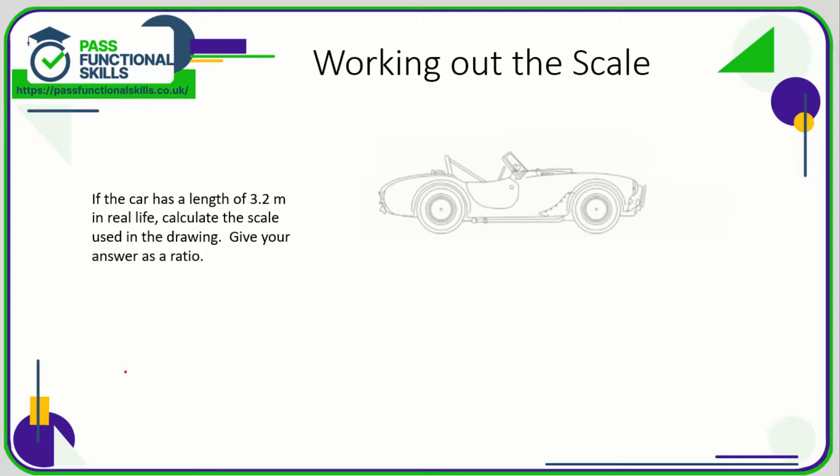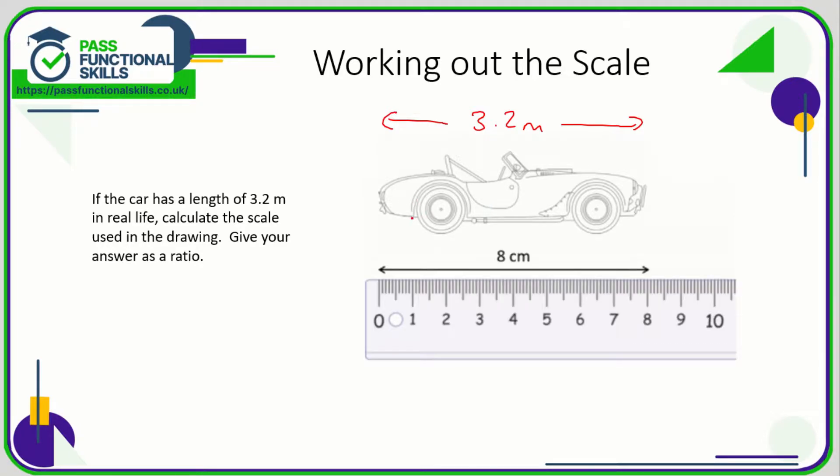Let's take a look at working out the scale. In this question we know that this car has a length of 3.2 meters, so the first thing I'm going to do is measure it. The scale drawing is 8 centimeters from bumper to bumper, so 8 centimeters equals in real life 3.2 meters.